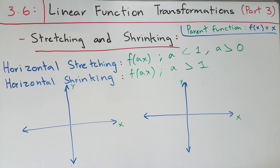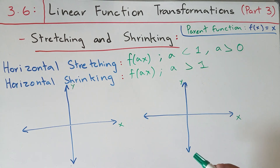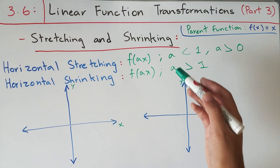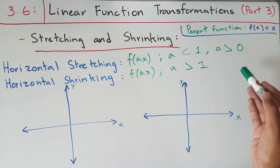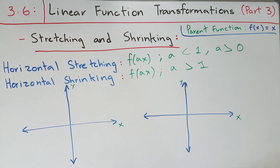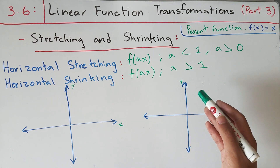What makes the difference between horizontal stretching and horizontal shrinking? The general expression for both is f of a times x, but the difference is in the value of a. For a horizontal stretch, your a factor is going to be less than one but greater than zero — so it's a positive fraction. For horizontal shrinking, the expression is also f of ax, but your a value is going to be greater than one.